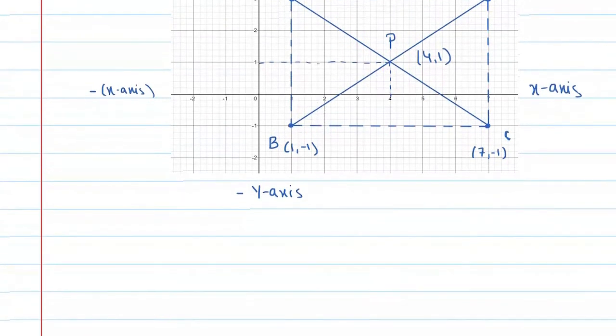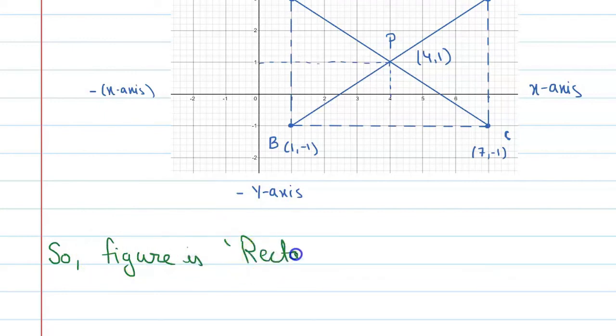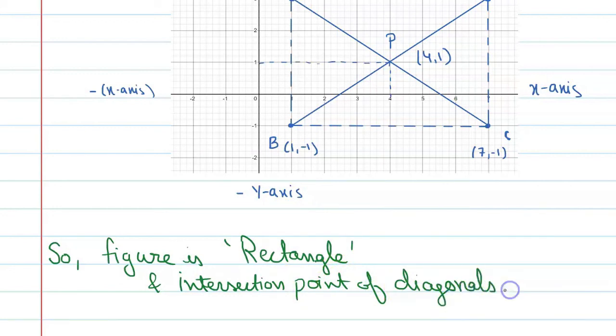So here we can see our final answer. Final answer is: figure name is rectangle, and the coordinate where the diagonals meet is (4,1). So figure is rectangle and intersection point of diagonal is (4,1). Thank you.